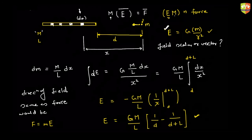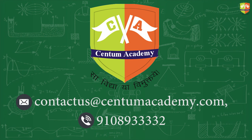The unit of gravitational field is Newton per kilogram. We can similarly derive field expressions for other objects, which is what we will be doing next.